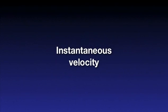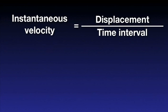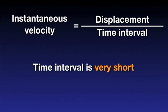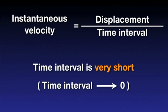This brings us to the definition of instantaneous velocity, or simply, velocity. The instantaneous velocity is defined as the displacement divided by the time interval when the time interval is very short. In mathematics you would say that the time interval approaches zero, or tends to become zero. In other words, the instantaneous velocity is the average velocity over an infinitesimally short time interval.